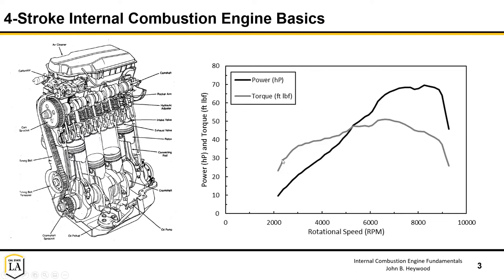Ideally you want a rather flat torque curve. As you increase speed, power slowly goes up until it reaches its peak. You want this peak to be as high as possible and as wide as possible — and you want to operate in that range as much as possible. Having this power band as wide as possible allows you to operate at high power for as much of the time around the track as possible, which is ideal.